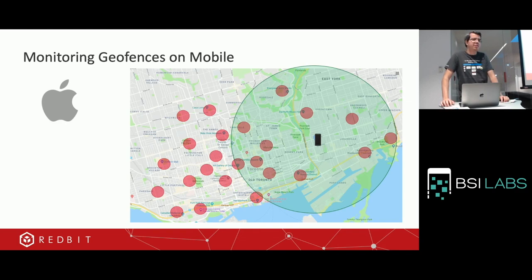Some stores need it — like when you're walking into a specific store in a mall, the geofence is specifically for the boundaries of their store. You have your store's format, and sometimes it's not a perfect square or a perfect circle.